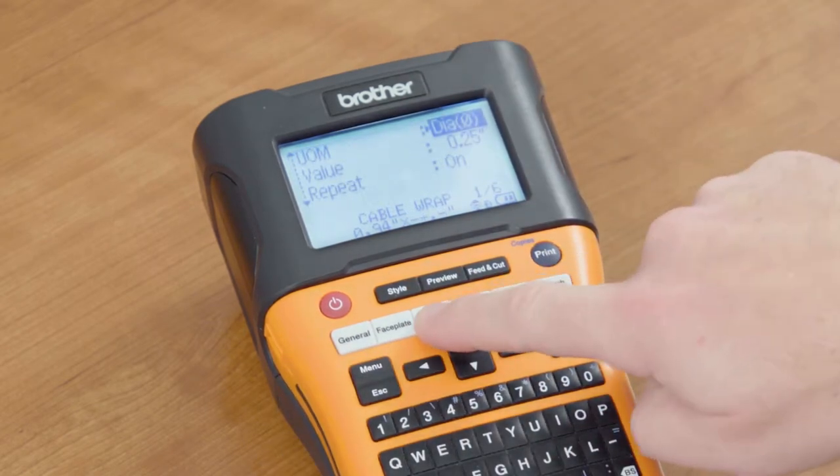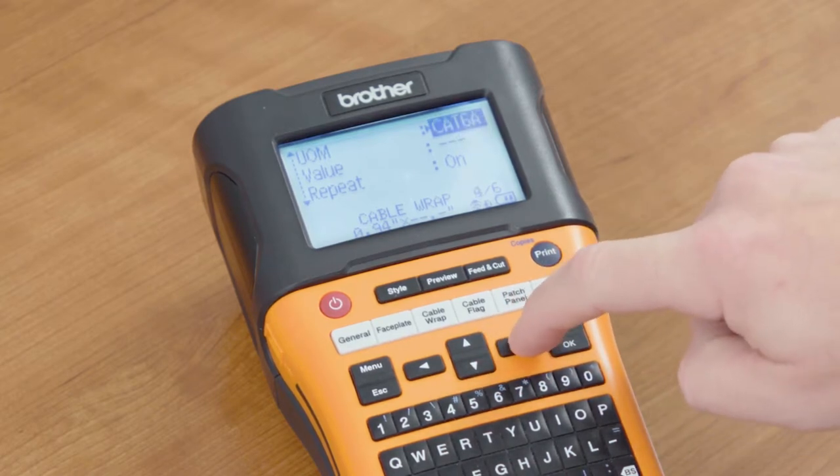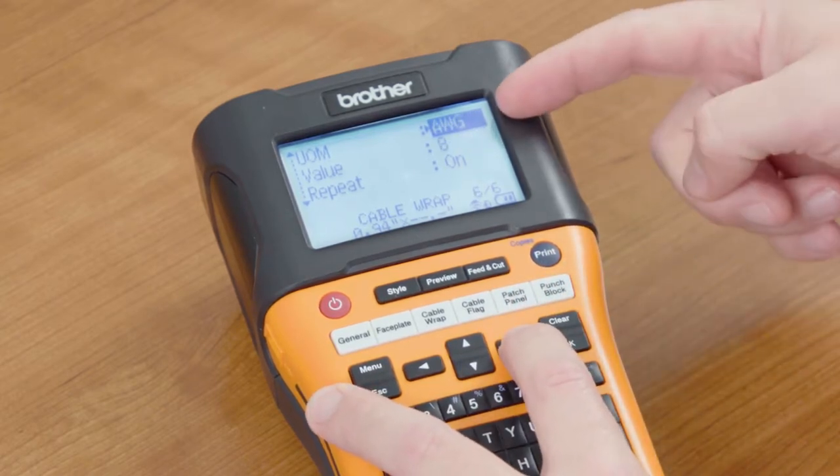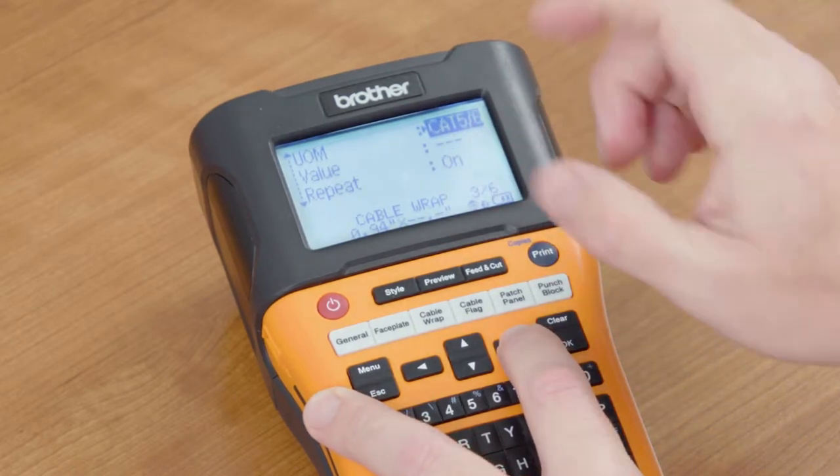Simply select the cable wrap button on the top and then scroll through your different cables. You can see that a lot of them are already predetermined here. You can select the diameter, length of the actual cable wrap that you want.